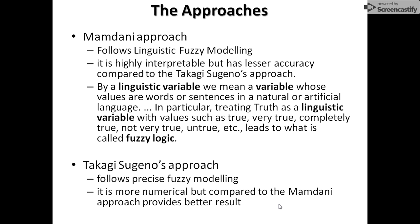The approaches used with this fuzzy logic controller are the Mamdani approach and the Takagi-Sugeno approach. The Mamdani approach is easier to implement because it uses linguistic variables — for example, representing dirt as 'very much dirt,' 'less dirt,' 'very very dirty,' or 'no dirty.' Similarly for truth, we use 'very true,' 'true,' 'completely true,' 'not very true,' and so on. The Takagi-Sugeno approach follows precise fuzzy modeling; it is more numerical but provides better results. However, in terms of ease of implementation, the Mamdani approach is much better.